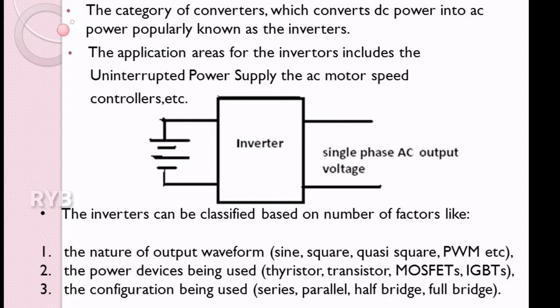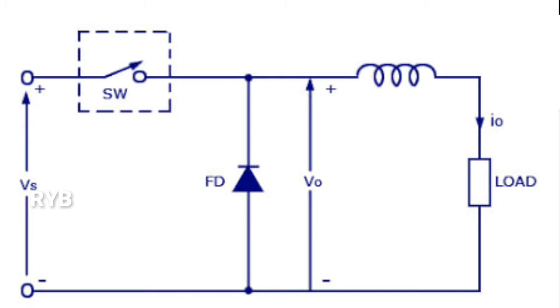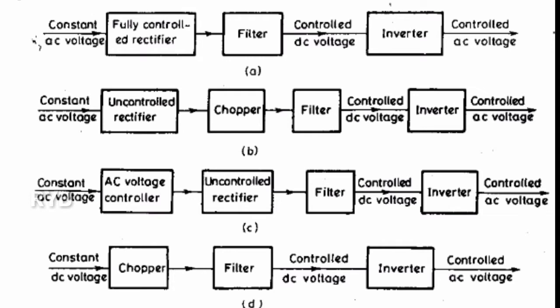PWM stands for pulse width modulation. The conversion of DC power to AC power can be done using two approaches. In the first approach, a low voltage DC power is converted into high voltage DC power, and then this high voltage DC is converted into AC. In the second approach, a low voltage DC power is converted into low voltage AC power, and then it is stepped up to high voltage AC using transformers.